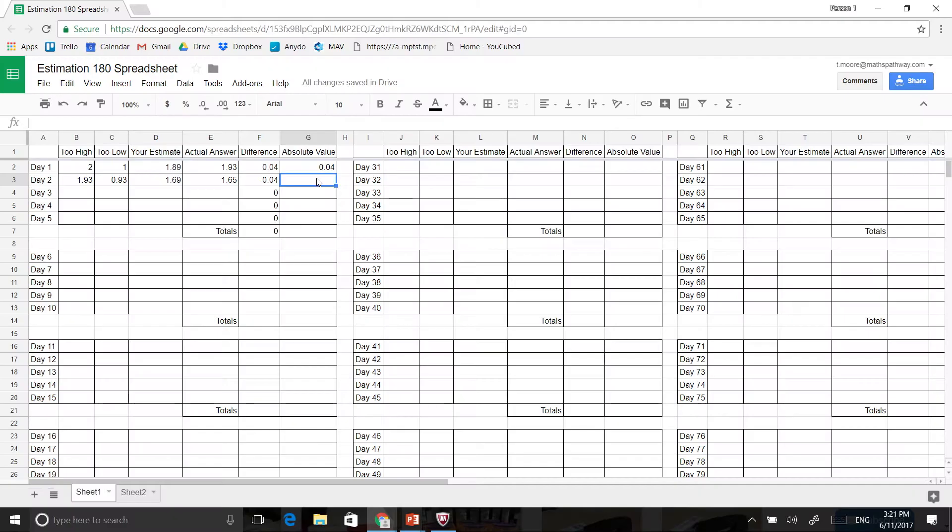So again, if I want to do that, I can go equals abs bracket, and I can click on this one here being F3, close bracket, and it will turn the negative into a positive. And once again, like anything, I can just drag that down here to continue the pattern on.